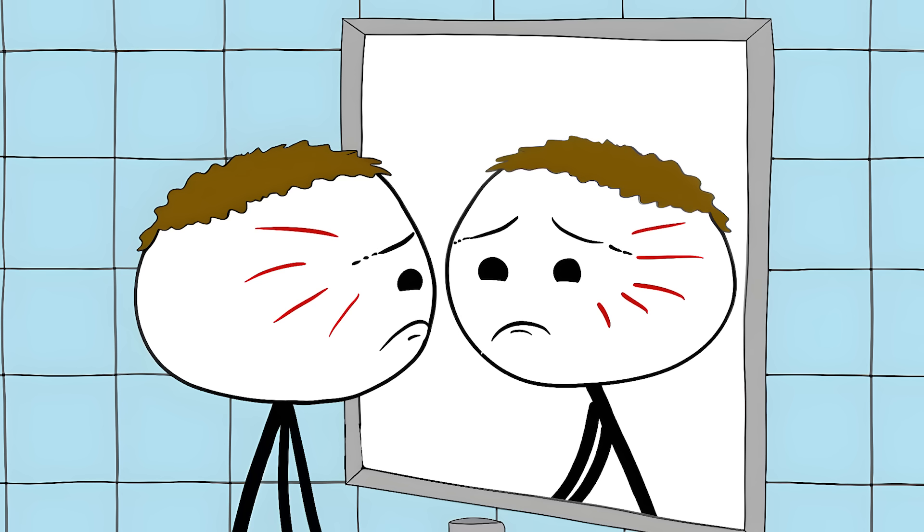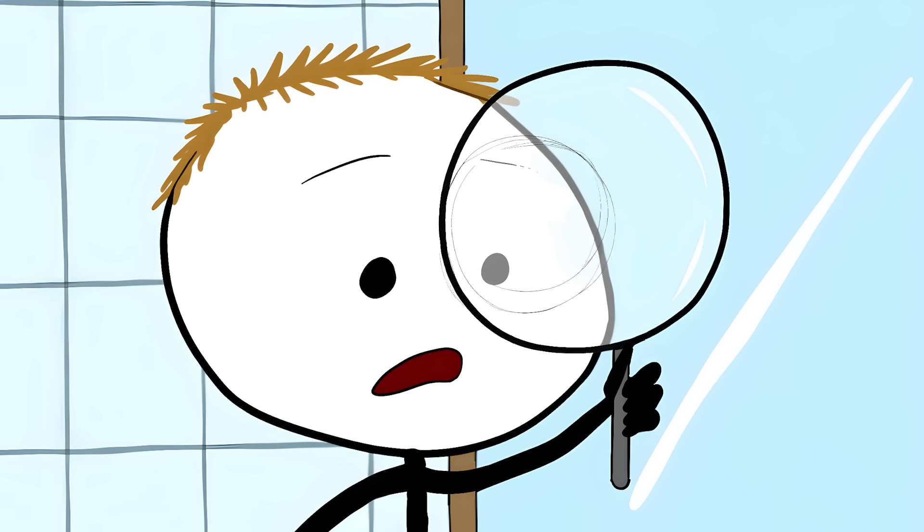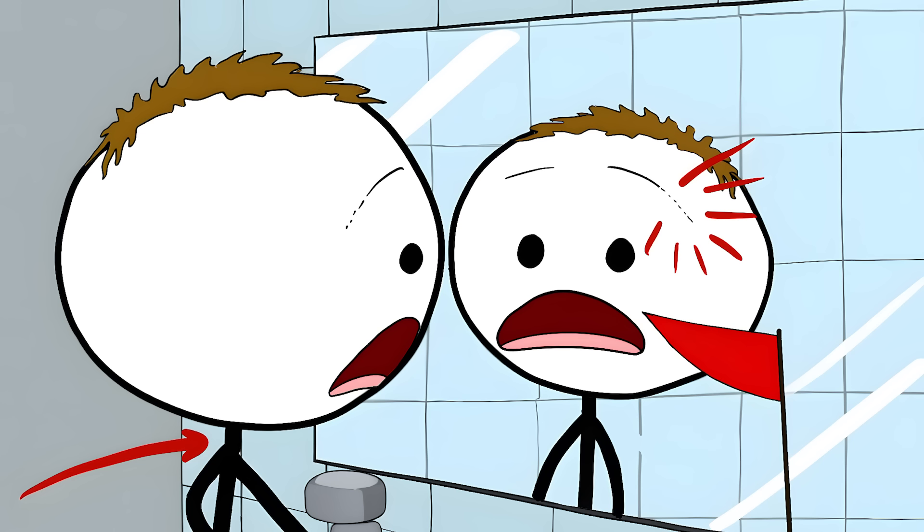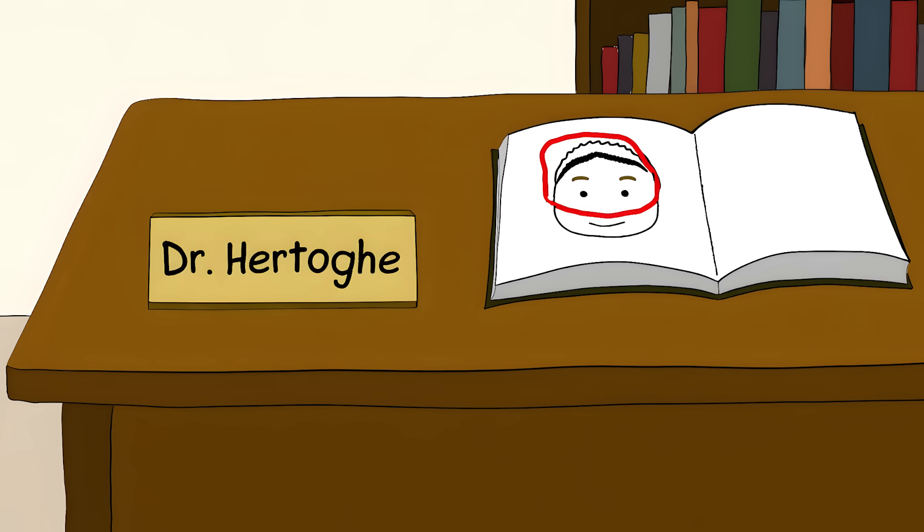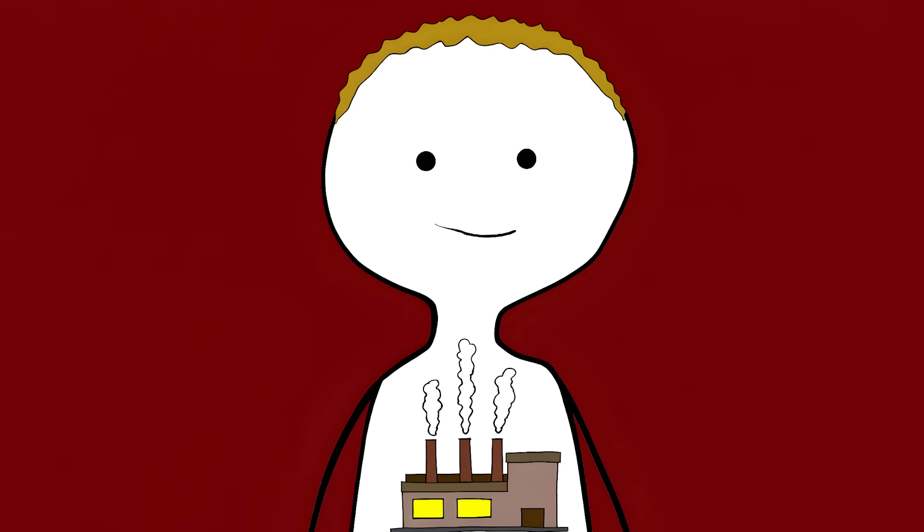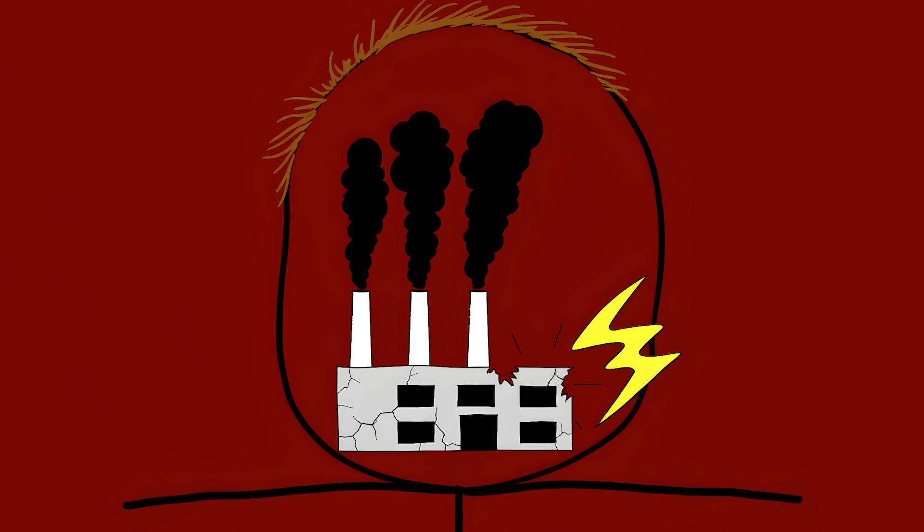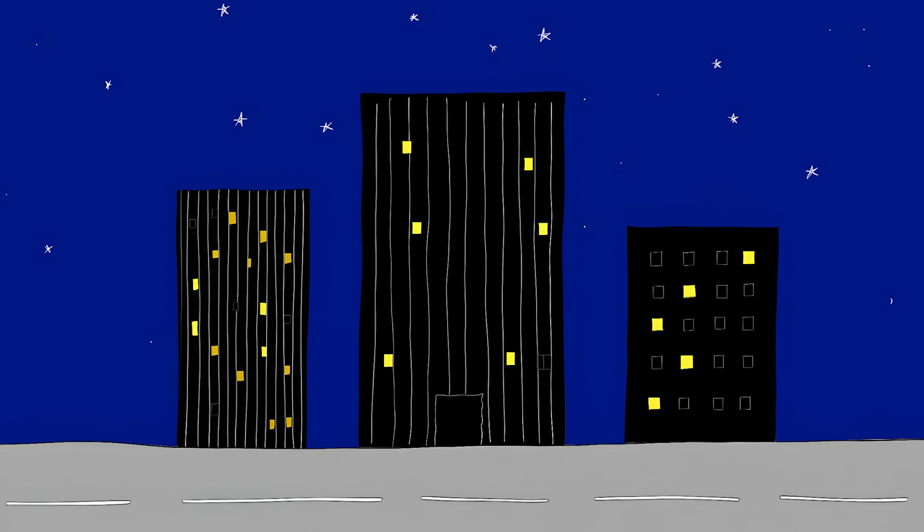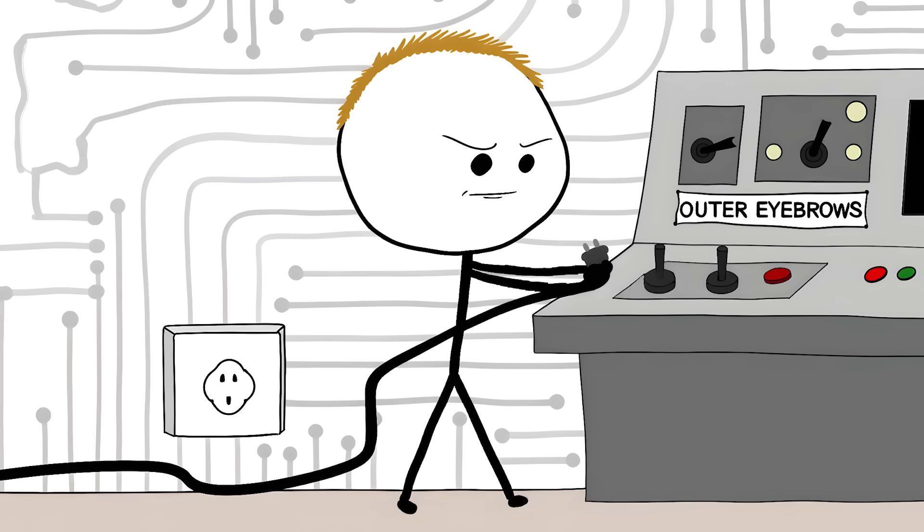The eyebrow that's disappearing. Your eyebrows might be trying to tell you something important. Notice the outer edges, the part near your temples. If that part is thinning out or disappearing, your body is waving a red flag about your thyroid. It's called Hertoghe's sign. Your thyroid is like your body's power plant. When it starts failing, your body experiences a power shortage. And just like a city during a blackout, your body starts shutting down non-essential services first, and those outer eyebrow hairs are considered non-essential.